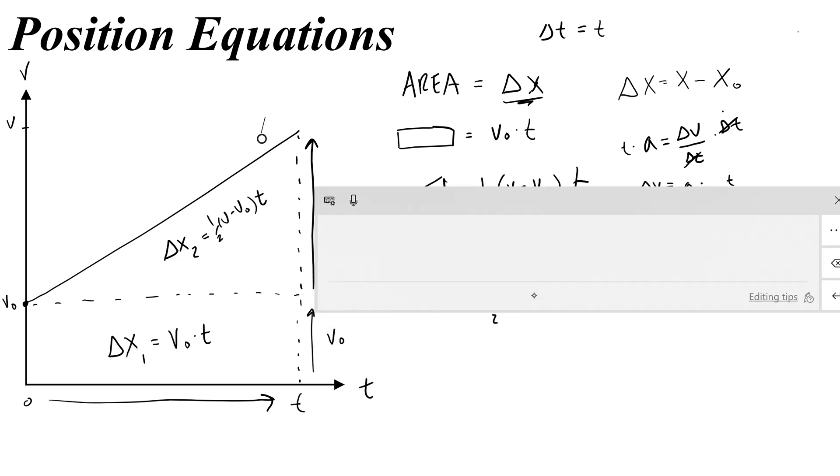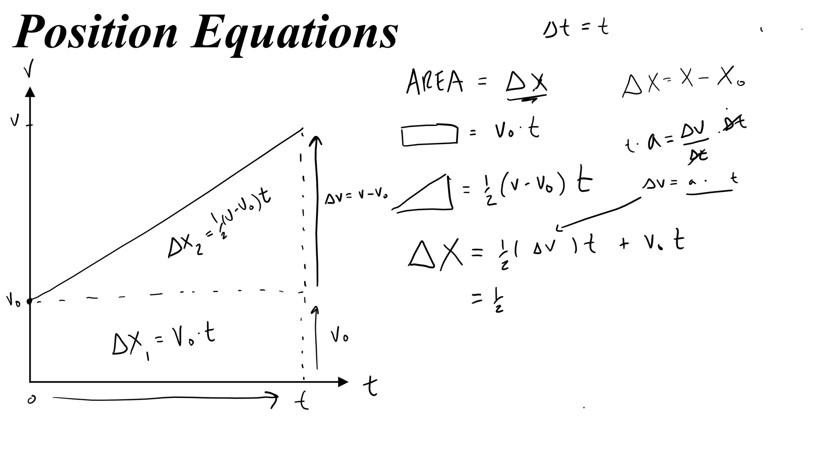Okay, so now I can plug in a times t for my delta v equation. This would give us one-half a t times t plus v naught t, which I could write as one-half a t squared plus v naught times t. Okay, so this is our second position equation. That is super useful for us because I can look at the displacement of an object if I know its initial velocity and its acceleration. Now, again, it's common for me to write this as x equals one-half a t squared plus v naught t plus x naught. Because I've taken the x naught from delta x and added it to the right side so that I get more of a graphable equation.